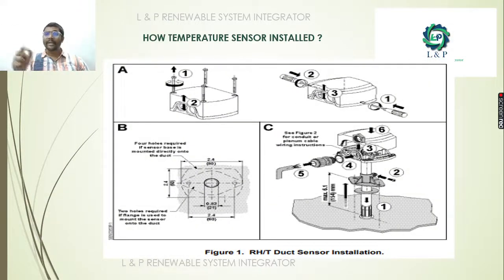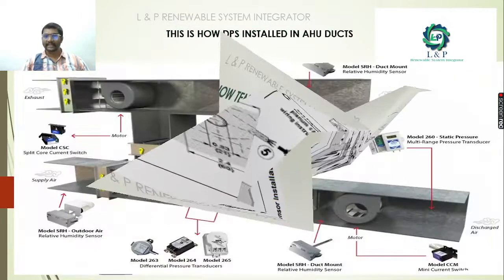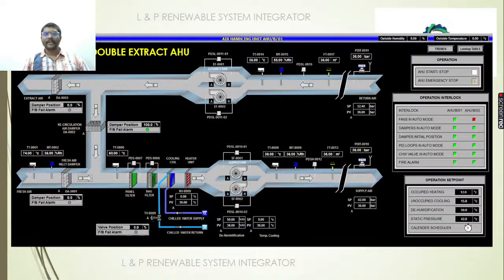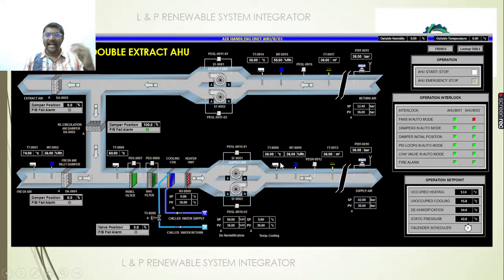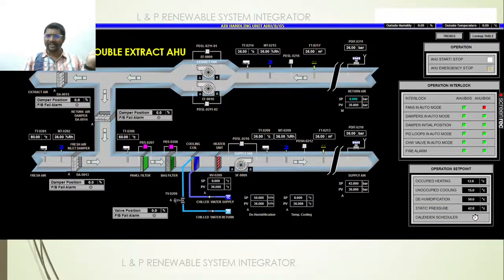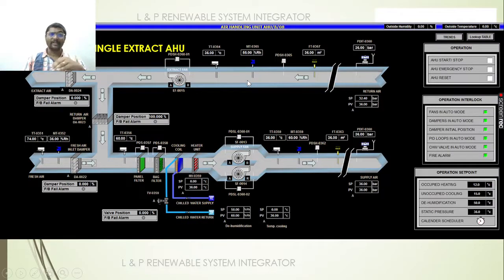If you plan to install duct-mounted temperature sensors, this is how you install them inside the duct. Even duct-mount relative humidity sensors look the same. We take the electrical output from these sensors, scale them with the required ranges, and through mapping display them on the SCADA. For an AHU, we have temperature sensors on the fresh air side, the supply side, and the return air side, and based on these temperature sensors we monitor many things.